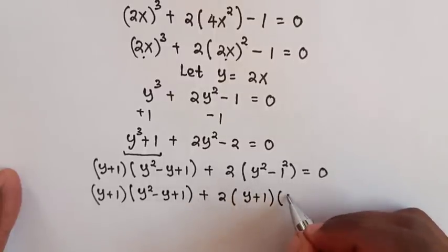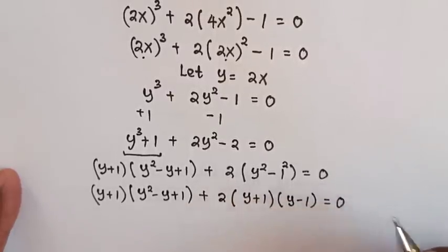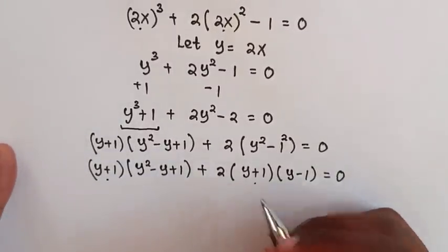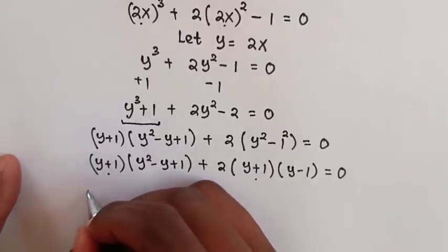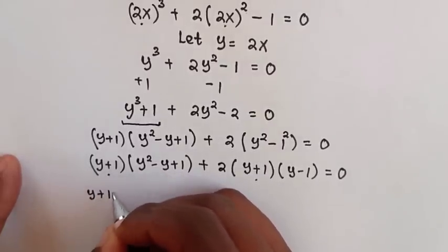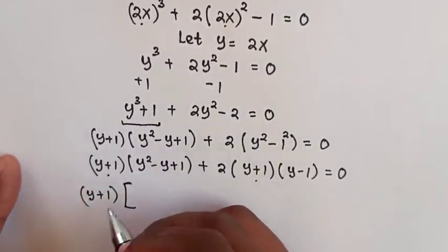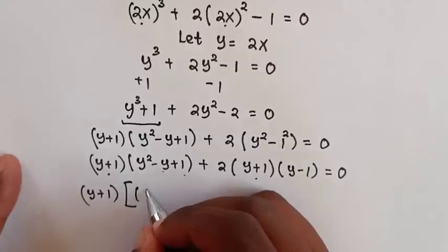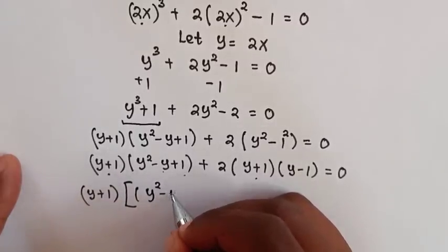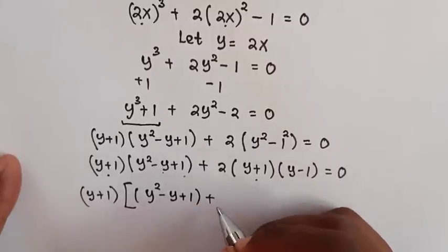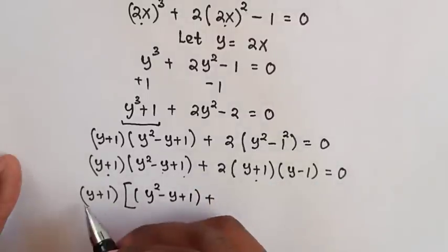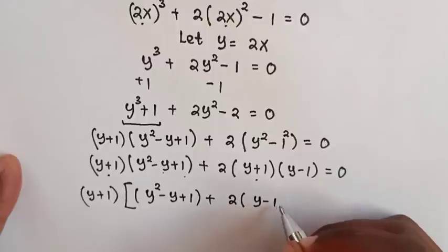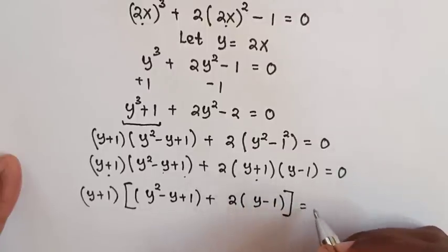So it will be (y plus 1)(y squared minus y plus 1) plus 2(y plus 1)(y minus 1) is equal to 0. Then we can see y plus 1 is common. So we take (y plus 1) out of the bracket, and this gives (y plus 1) times 2(y minus 1) is equal to 0.